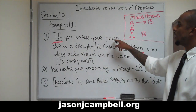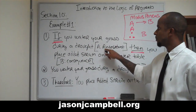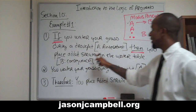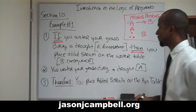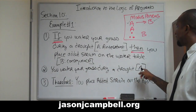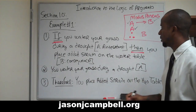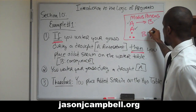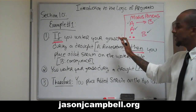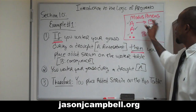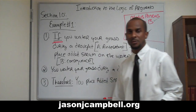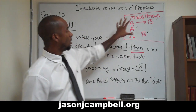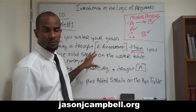If you water your grass during a drought — we satisfy this part. Then you place added strain on the water table — we satisfy this part. You water your grass during a drought — we satisfy this part. Therefore, you place added strain on the water table — we satisfy this part. Once we check off all the pieces, we have properly appropriated modus ponens to the construction of an argument.